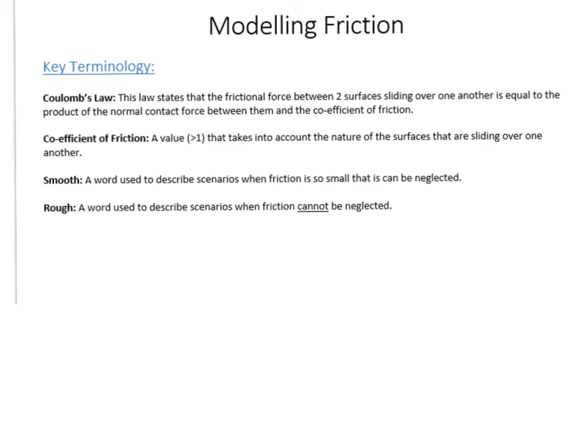So let's get a few key things out of the way. In this video, we're going to be using Coulomb's Law of Friction. And that states that the force between two surfaces, or the frictional force, is equal to the product of the normal contact force, which you usually give the symbol R, and the coefficient of friction. So what is the coefficient of friction? Well, it's a value that takes into account the nature of the surfaces, where they're adhesive, how rough they are, whether the objects are attractive to each other, that kind of thing.